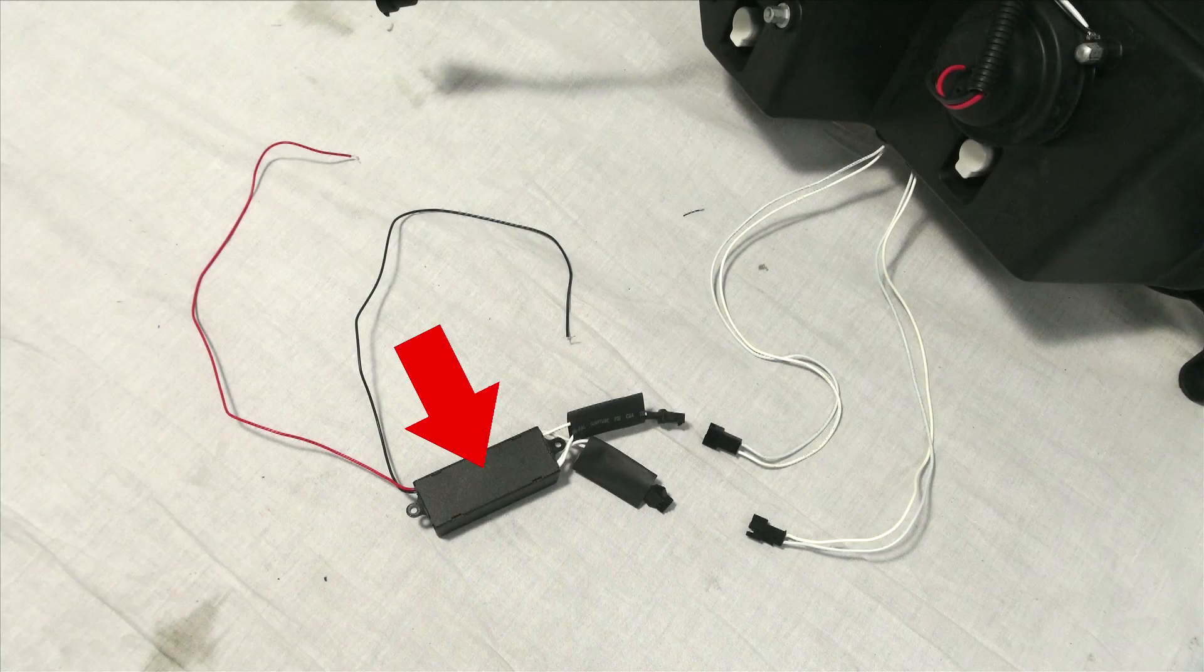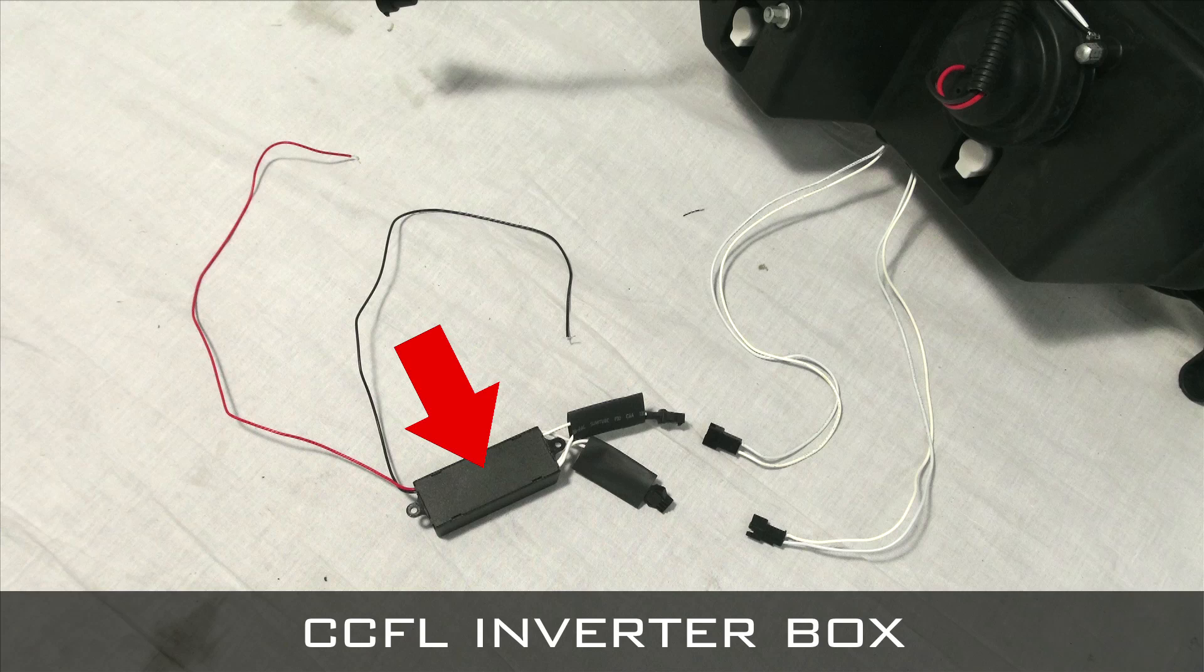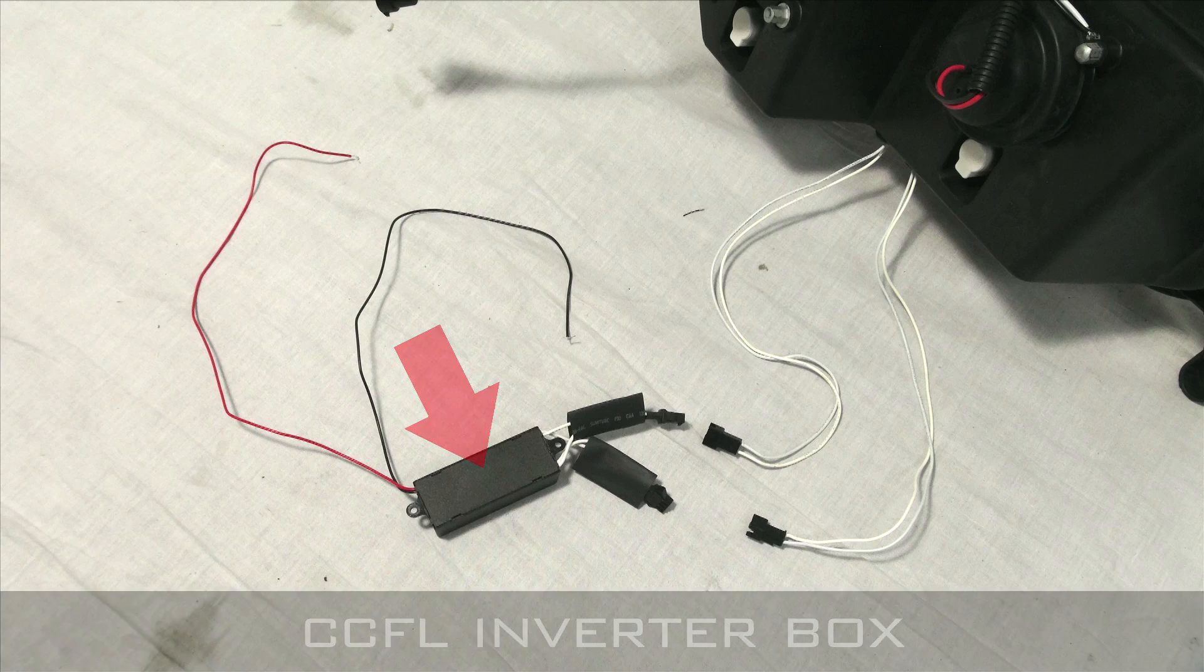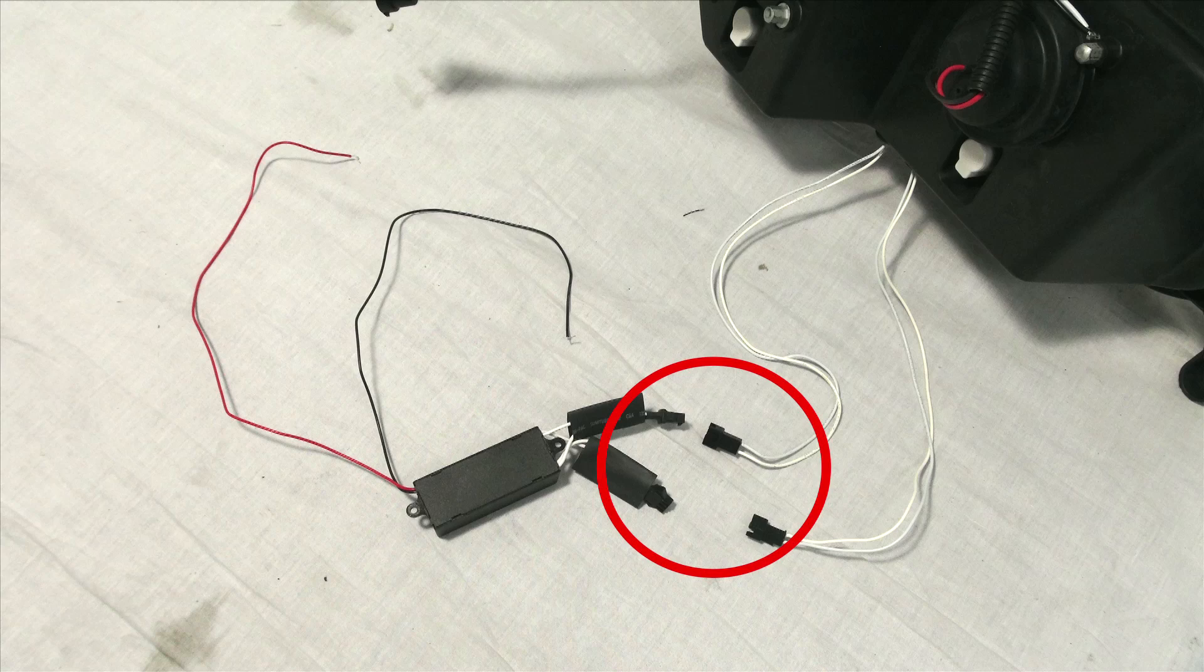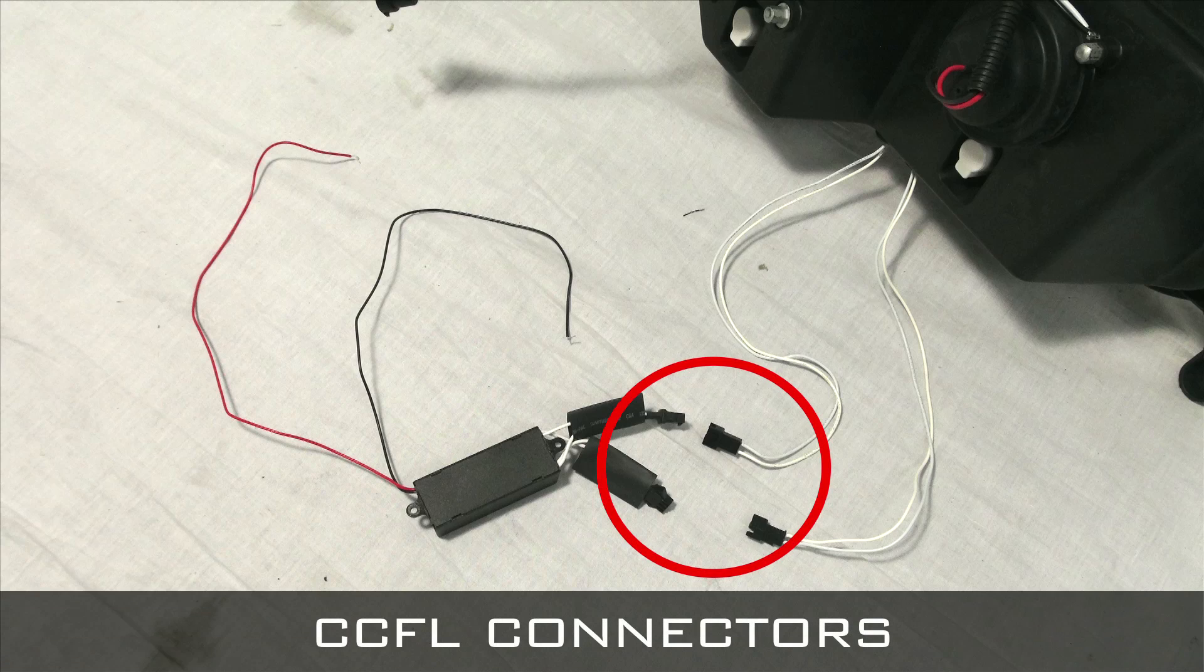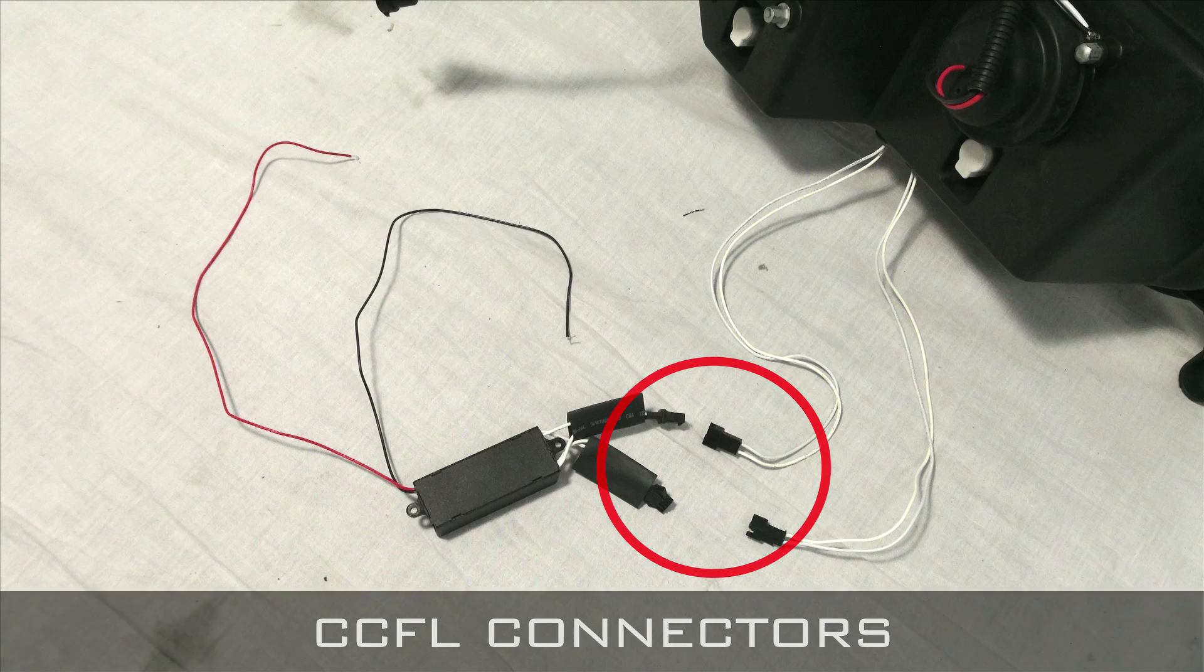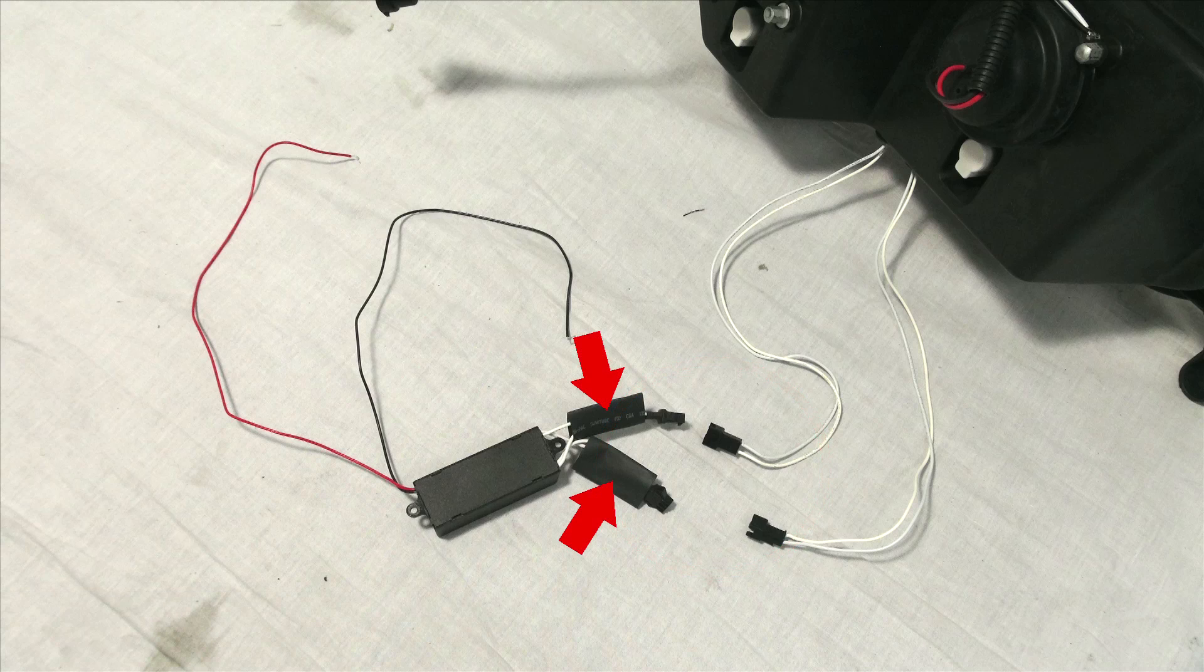If your product features CCFL halo rings, you will have to connect the inverter box first. Clip in both connectors and slide the provided heat shrink tubing over the connector. Apply a generous amount of heat so that the tubing will shrink around the connector.